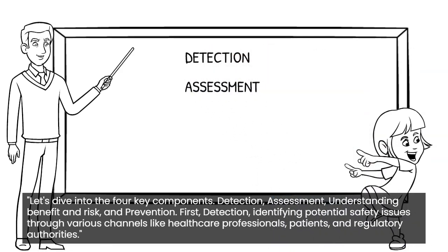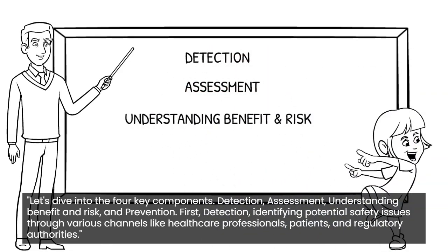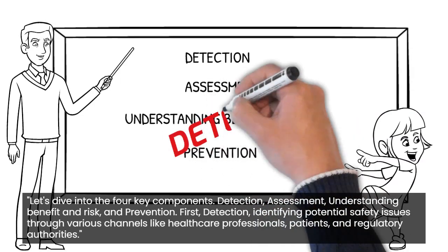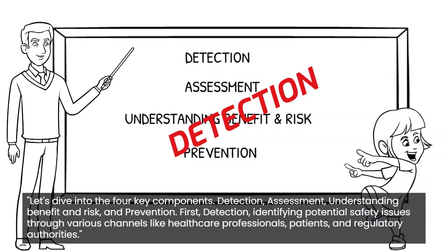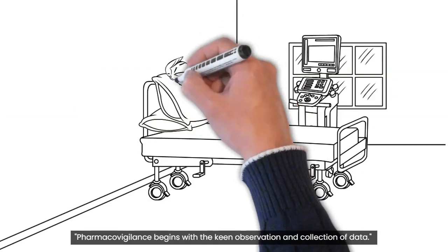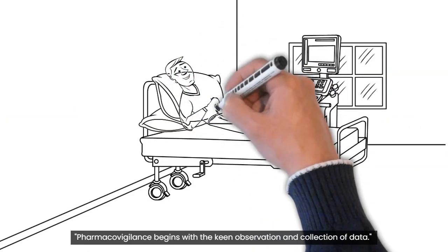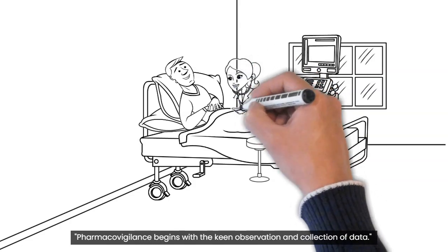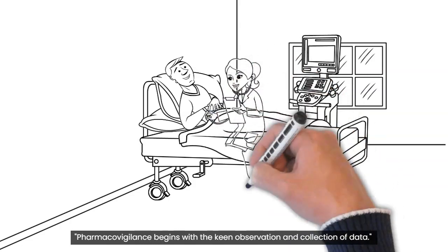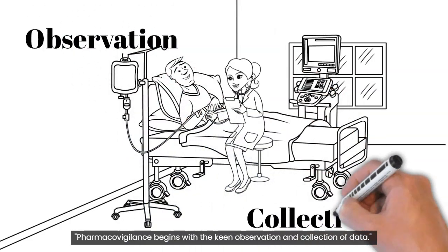Detection. Assessment. Understanding of benefit and risk. And prevention. First, detection: identifying potential safety issues through various channels like healthcare professionals, patients, and regulatory authorities. Pharmacovigilance begins with the keen observation and collection of data.